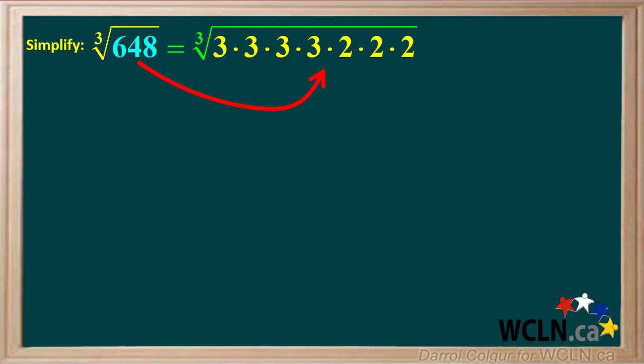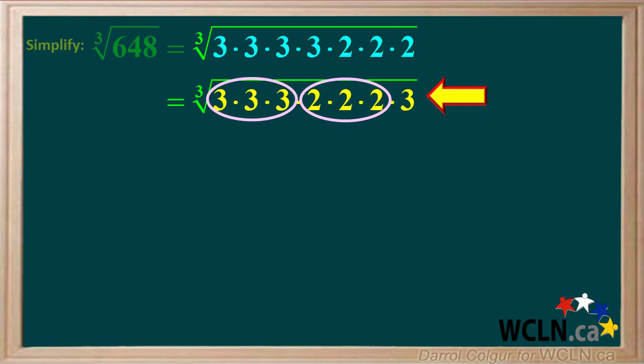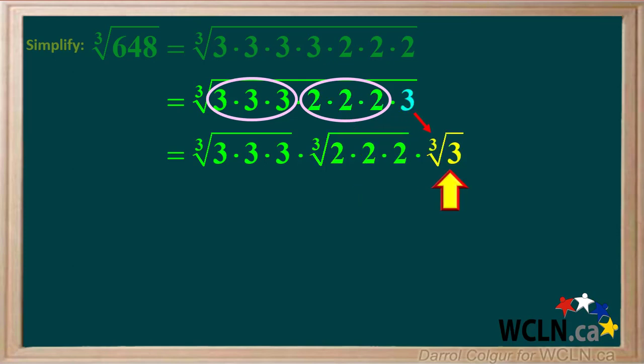Multiply all these numbers together and you should come up with 648. For cube roots, we find groups of 3 and circle them. So we can circle three 3's and three 2's. We'll rearrange the numbers so the group of three 3's and the group of three 2's are together, and we're left with a single 3 at the end. Now we'll break it up into 3 separate cube roots: the cube root of 3 times 3 times 3, times the cube root of 2 times 2 times 2, times the cube root of 3.